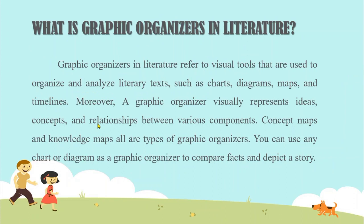So what is graphic organizers in literature? Graphic organizers in literature refers to visual tools that are used to organize and analyze literary texts, such as charts, diagrams, maps, and timelines. Moreover, a graphic organizer visually represents ideas, concepts, and relationships between various components. Concept maps and knowledge maps are types of graphic organizers. You can use any chart or diagram as a graphic organizer to compare facts and the text story.